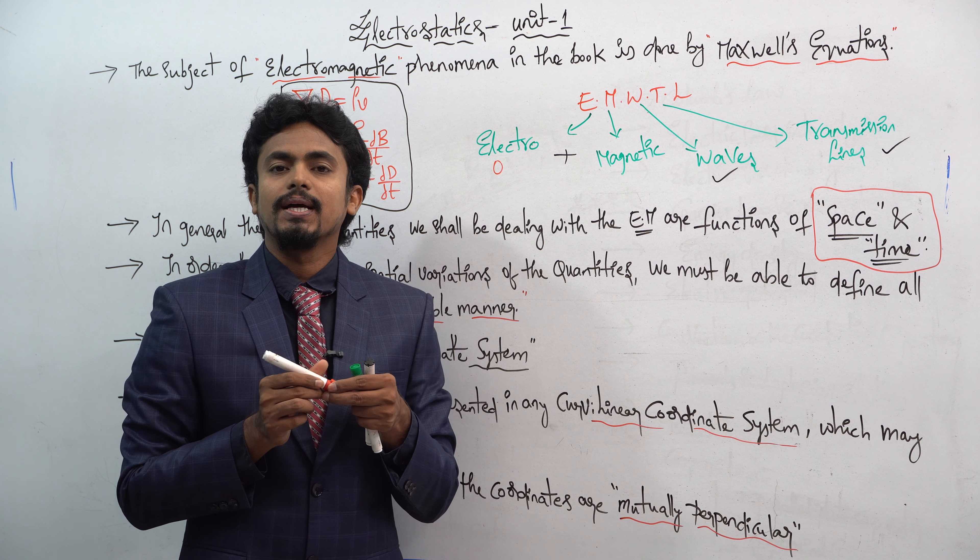To define points uniquely in space in a suitable manner, this requires an appropriate coordinate system. A point or vector in space can be represented using a curvilinear coordinate system, which may be orthogonal or non-orthogonal.